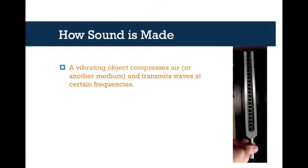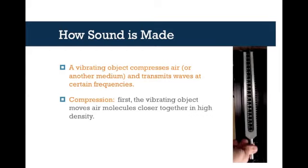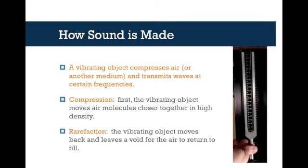So first, how do we make sound? This tuning fork is going to provide an example. The basic idea is that you have something that's vibrating and it compresses air or something else and transmits waves — it compresses or stretches something and moves waves at certain frequencies. The first part is compression, where the ends of the tuning fork get closer together. The second half of that motion is called rarefaction, where the object moves back and leaves a space for air to return. You get this pattern of air being compressed and then released, and that's how sound waves are made.